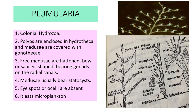The second example is Plumularia, a colonial hydrozoan. Polyps are enclosed in hydrotheca and medusa are covered with gonotheca. Free medusa are flattened, bowl or saucer-shaped, bearing gonads on the radial canal. Medusa bears statocysts. Eyespots or ocelli are absent. It eats microplankton.